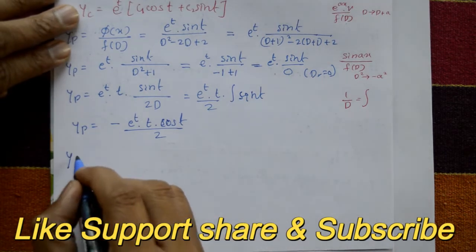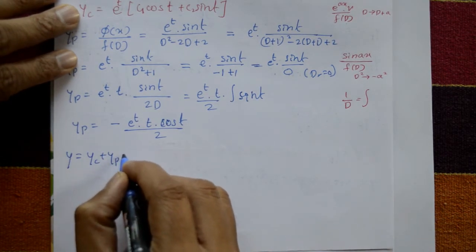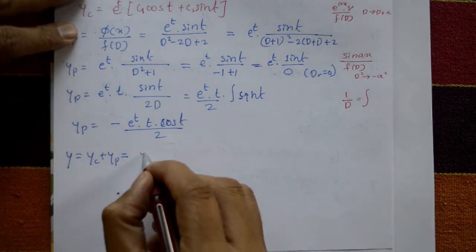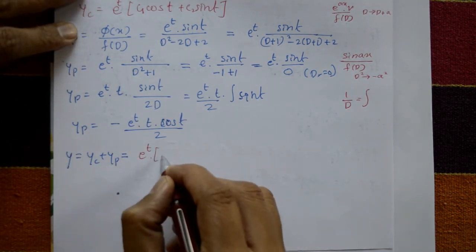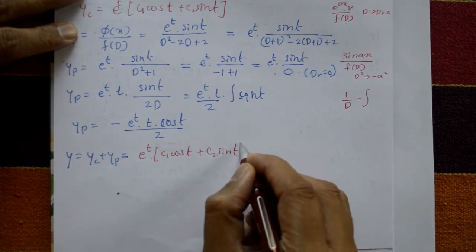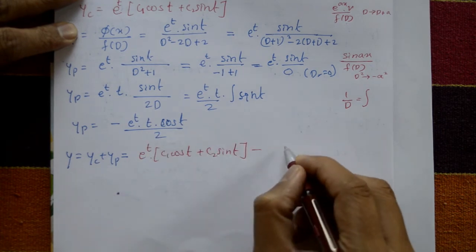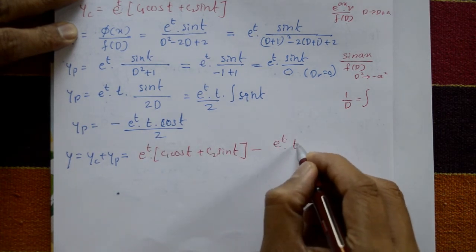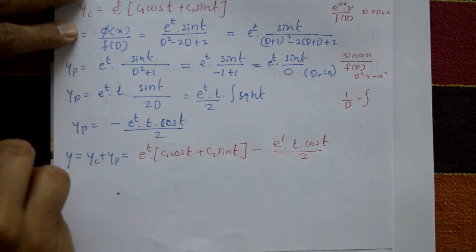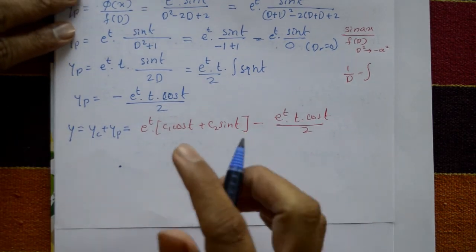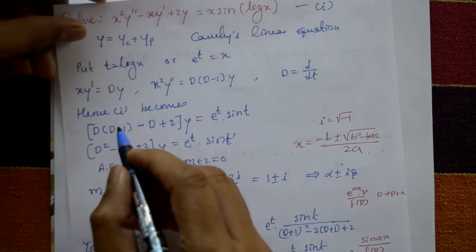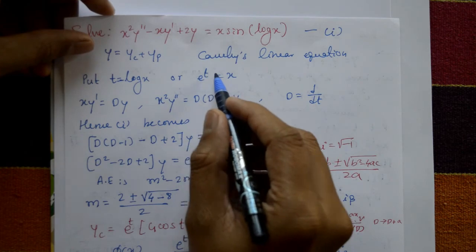The complete solution is complementary function plus particular integral: y = e^t(c₁ cos t + c₂ sin t) − (e^t · t · cos t)/2. This problem is asked many times in theory exams. Now substitute back: t = log x and e^t = x.